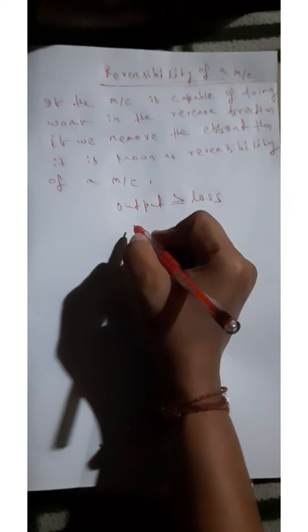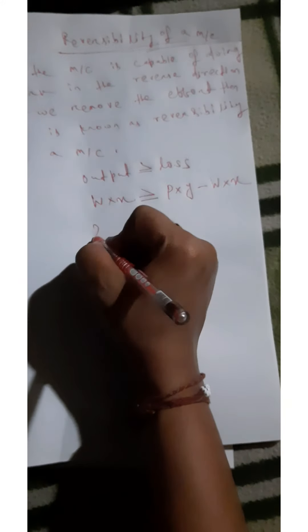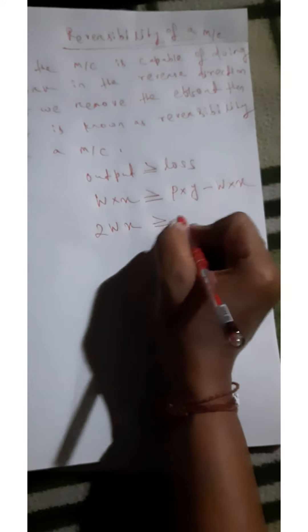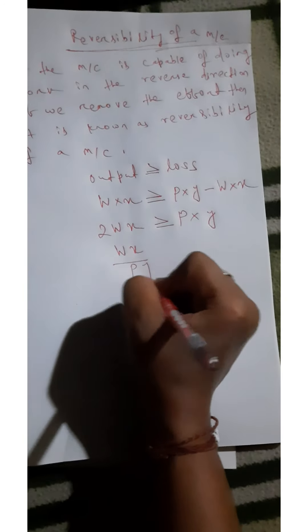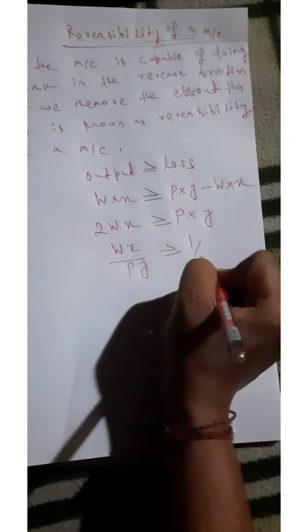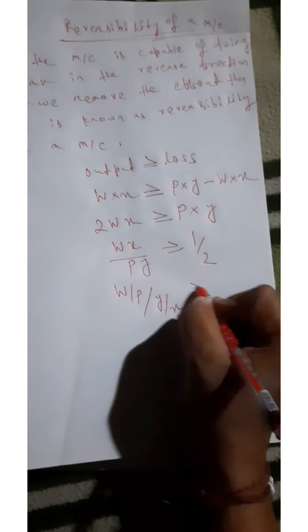Output is W × X. Loss equals P × Y minus input minus output, that is P × Y minus W × X. Rearranging, we get 2·(W × X) ≥ P × Y, so W × X divided by P × Y ≥ 1/2. Rearranging further: (W/P) divided by (Y/X) ≥ 1/2.